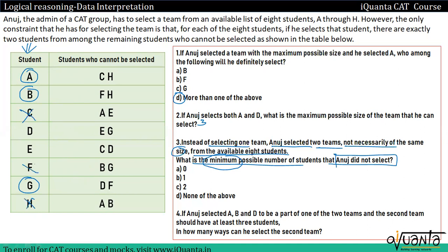थोड़ी देर पहले जब question one solve किया था, तब एक team आ रही थी: A, B, E और G। A के साथ C और H नहीं थे, B के साथ F और H नहीं थे, G के साथ D और F नहीं थे। अब एक और team बना सकते हैं: C, D, F और H। C के लिए condition है A और E को select नहीं कर सकते, D के लिए E और G को, F के लिए B और G को, और H के लिए A और B को।